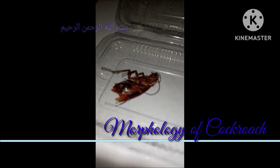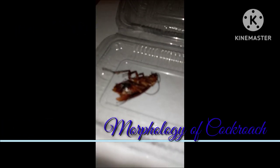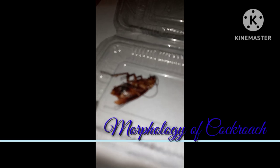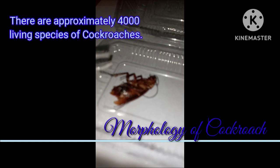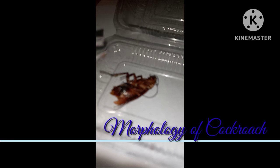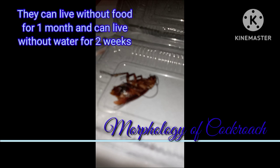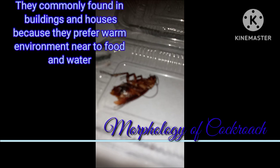Bismillahirrahmanirrahim. Today our topic is cockroach morphology. Cockroaches have been around since the time of dinosaurs. In this world there are approximately 4,000 living species of cockroaches. Though they can live without food for one month and without water for about two weeks, they are still commonly found in buildings and houses because they prefer warm environments near food and water.